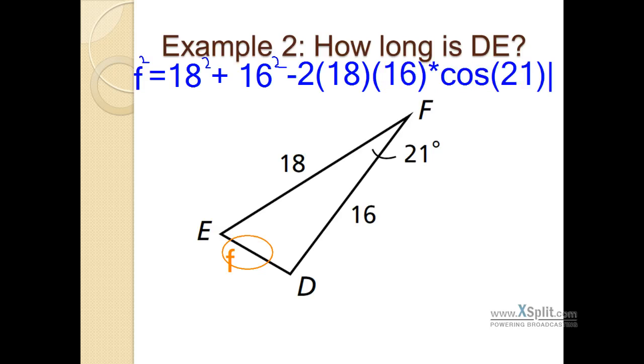Next up here, we need to do our order of operations. So I'm going to go ahead and take all of this portion right here, plug it into my calculator, the 2 times the 18 times the 16 times the cosine of 21 degrees. Plugging that all into my calculator, I get 537.7. On the other two pieces, like 18 squared and 16 squared, I'm going to go ahead and just type those into my calculator real quick. 18 squared is 324, and 16 squared is 256.